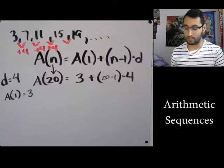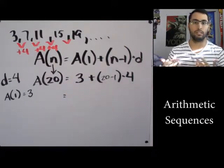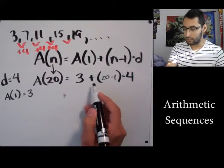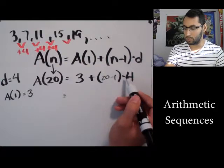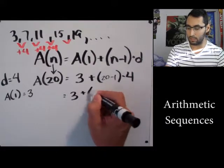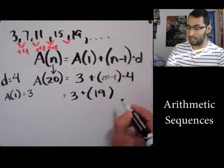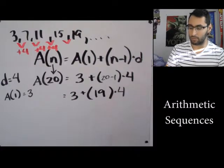Once you have it like this, you can now just simplify. So I have addition, I have parentheses, and I have multiplication. What do I do first? Order of operations: parentheses. So we have 3 plus, well what is 20 minus 1? That's just 19, and 19 we're gonna keep times 4.